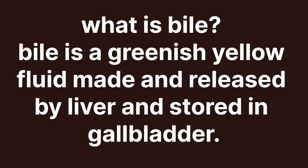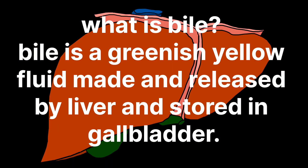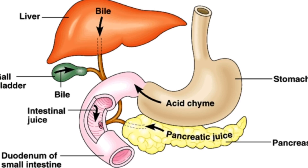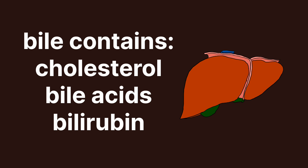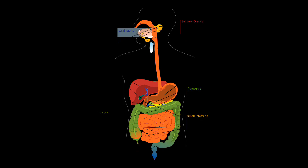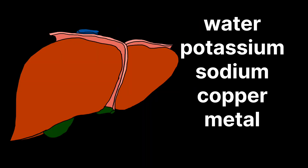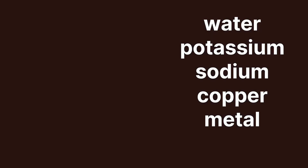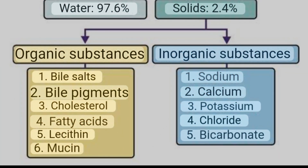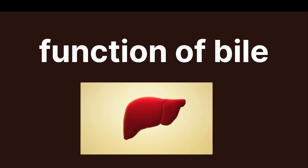What is bile? Bile is a greenish-yellow fluid that is made and released by the liver and stored in the gallbladder. Bile contains cholesterol, bile acids, bilirubin which is a breakdown product. It also contains water, some body salts such as potassium and sodium, copper and other metals.